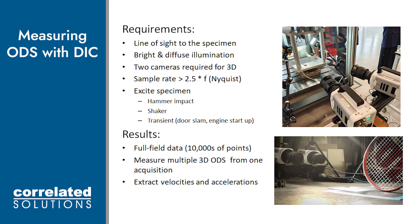There are some requirements needed for this measurement technique. The cameras need a clear line of sight to the speckle pattern. We need bright and even lighting across the speckle pattern. We want to capture images at about two and a half times the highest expected frequency. And the test should only last a few seconds at most. If we can get all of these things, the results will show full field color contour plots of 3D operational deflection shapes, which also allow us to extract local velocities and accelerations.